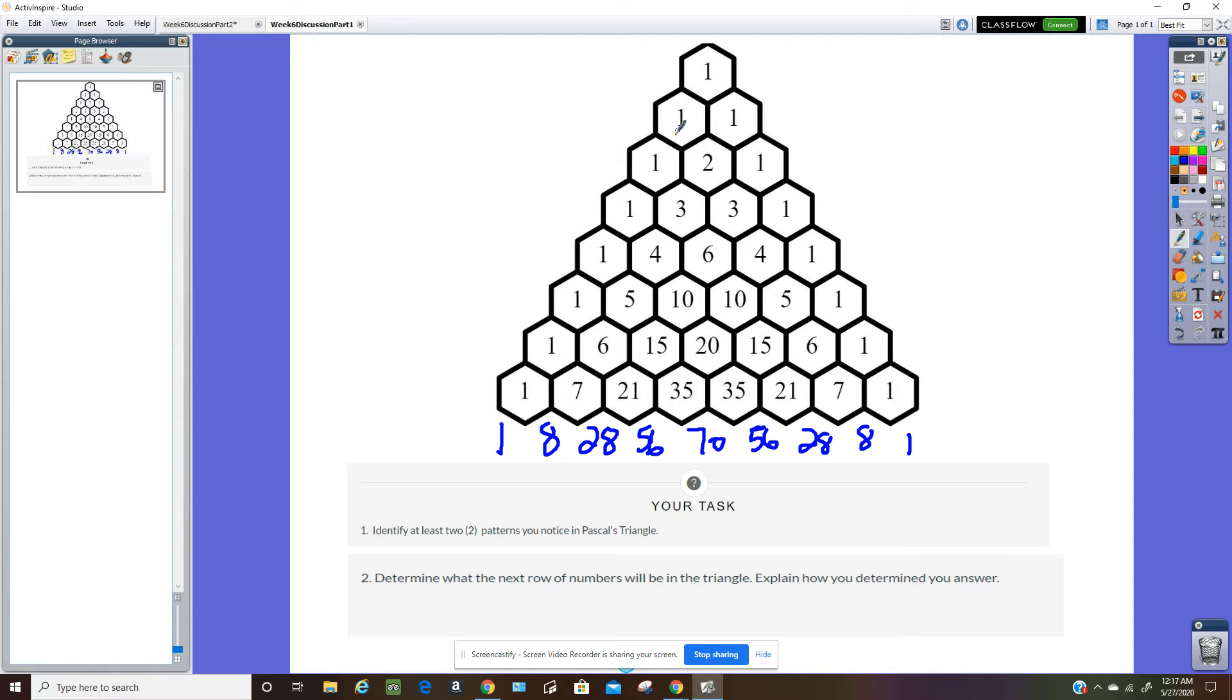If I look at Pascal's triangle, 0, 1, 2, 3. That's right here. 1, 3, 3, 1.